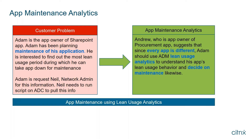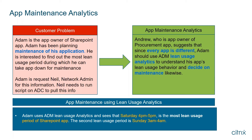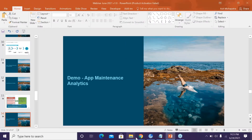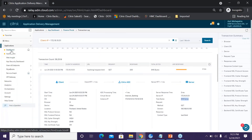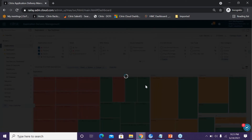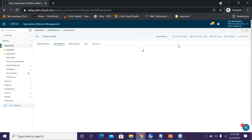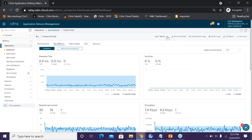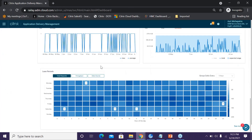Adam uses ADM lean usage analytics on the App Dashboard in the Key Metrics section and sees that Saturday 4 PM to 5 PM is the most lean usage period for the SharePoint application, and Sunday 3 AM to 4 AM is the second most lean. Based on this data, he makes a conscious decision to take maintenance on Sunday to have the least impact on users.